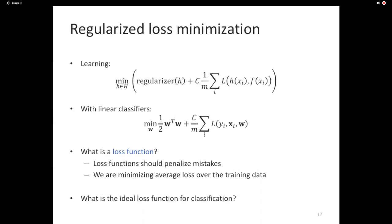If they are equal, you don't lose any points. If they are not equal, you lose one point. That's how you measure error of a classifier — you do this comparison over an entire set of examples, calculate how many points are lost, divide by the number of examples. That's the error of a classifier.